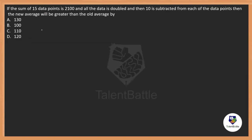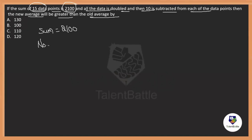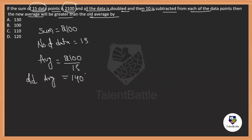The sum is 2,100 and the number of data points is 15. The average is sum divided by number, which is 140. So the old average is 140. Now, every number is doubled and then 10 is subtracted from each.